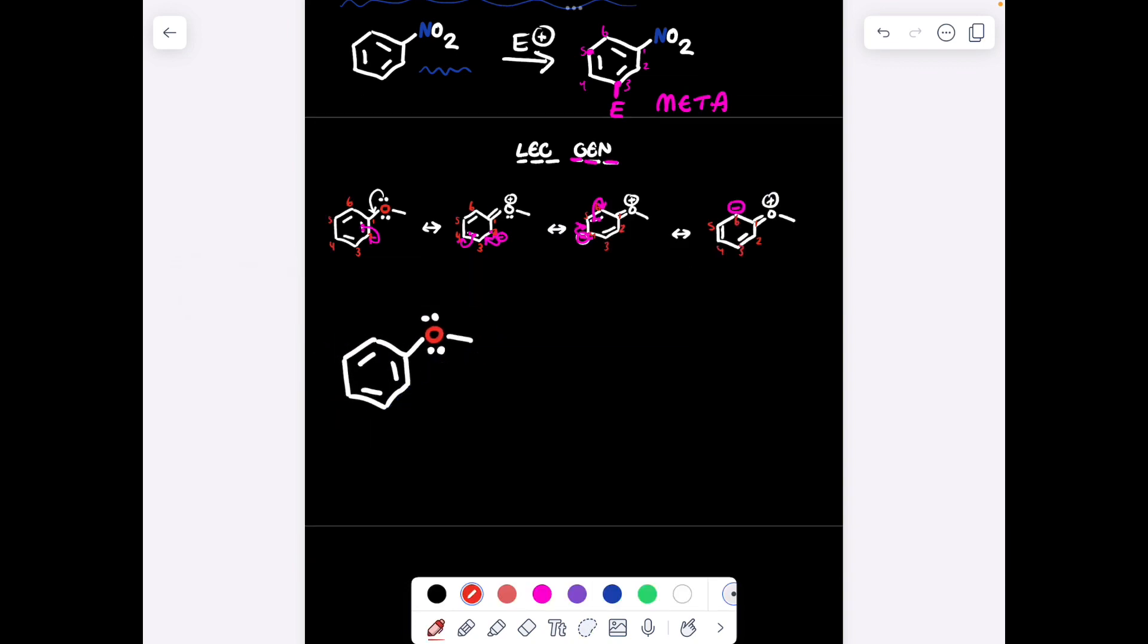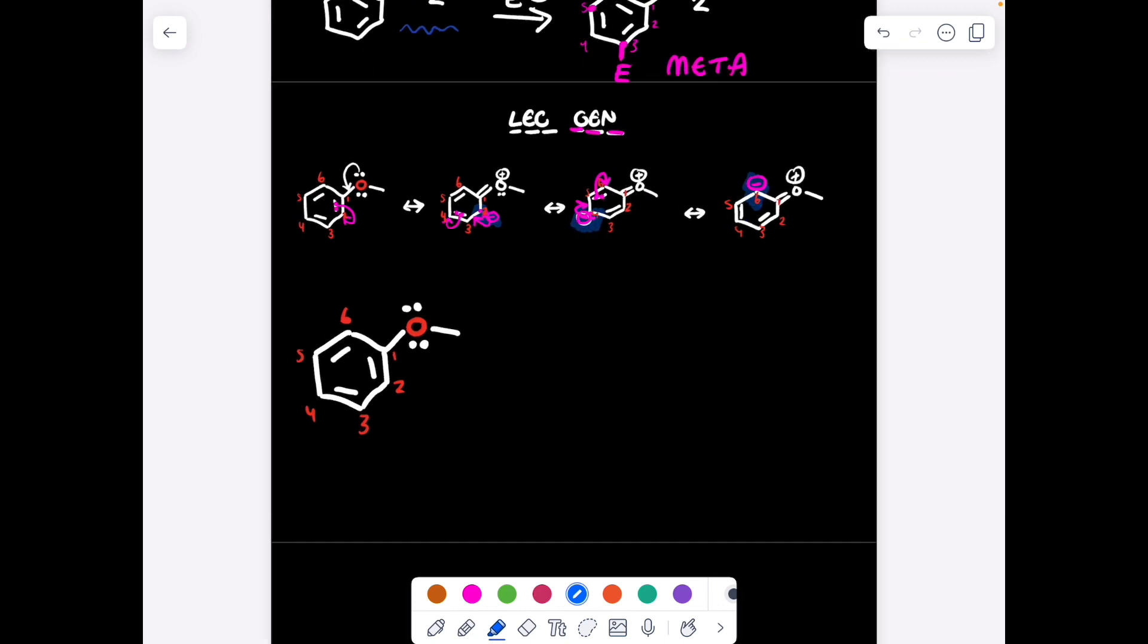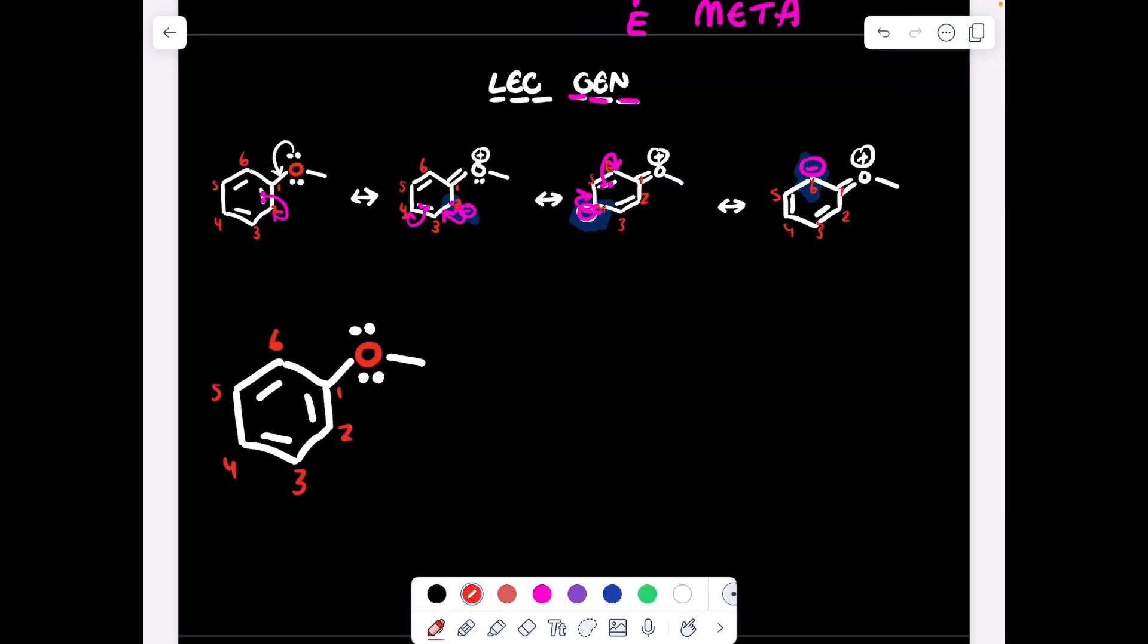Considering our original structure and the labeling we have arbitrarily defined, where did the negative charges end up? Well, they ended up on carbons number two, four, and number six. I can draw a fake little negative charge at two, six, and four. So carbons two, six, and four in our imaginary world are negatively charged, maybe all at the same time. This is just us using our imagination.